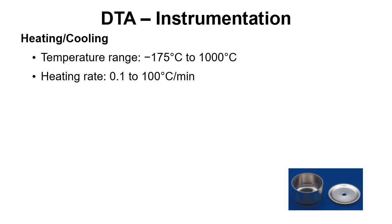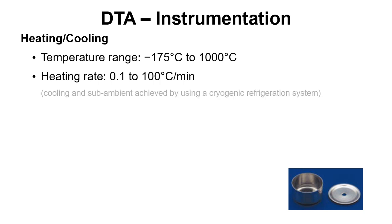If you go at the very slow end of that, the experiment is going to take a very long time. If you go at the very high end, so 100 degrees per minute, the experiment will go so quickly that the danger is you won't really see the thermal events properly — they'll get smeared out in the thermal trace. So what we typically do is go somewhere between 10, 15, or 20 degrees per minute. It depends on what you're looking at and your method development. Certain applications you might want to go slower or faster, and that's all part of the method development and thinking about your application.